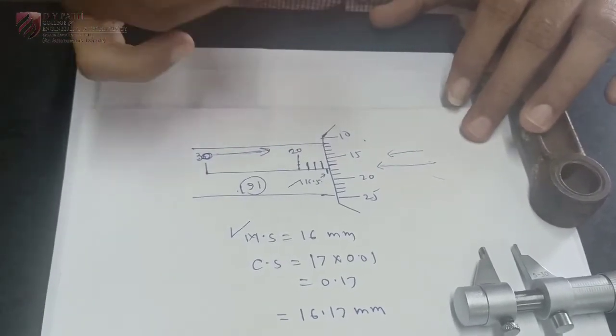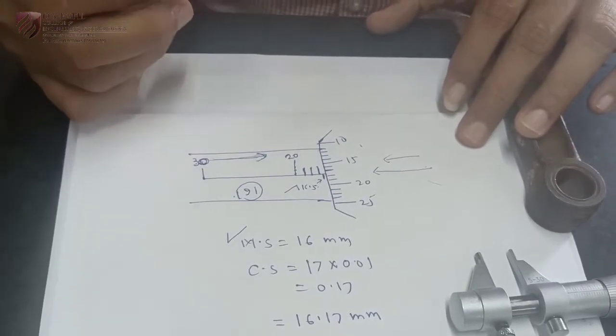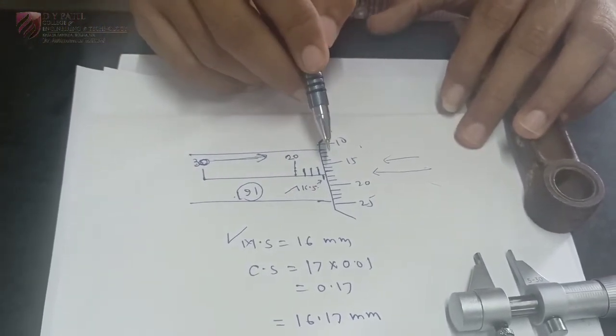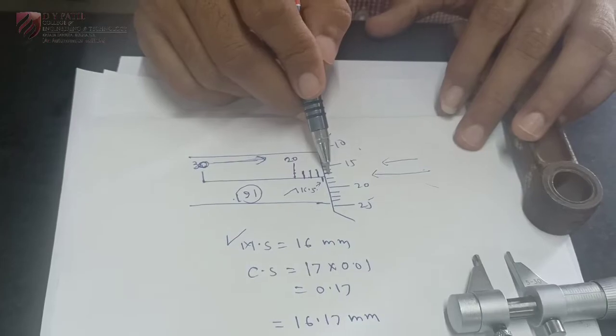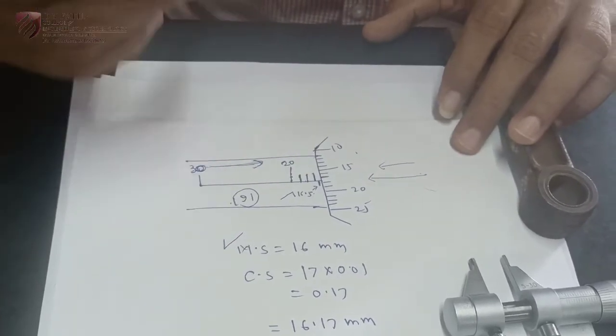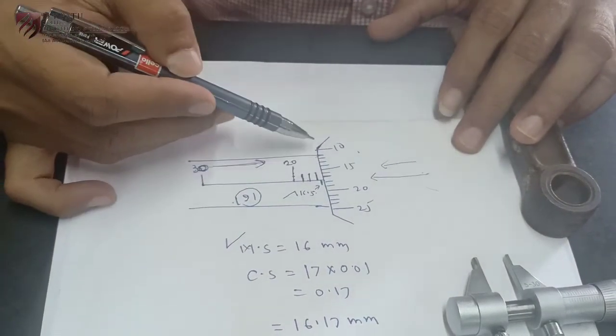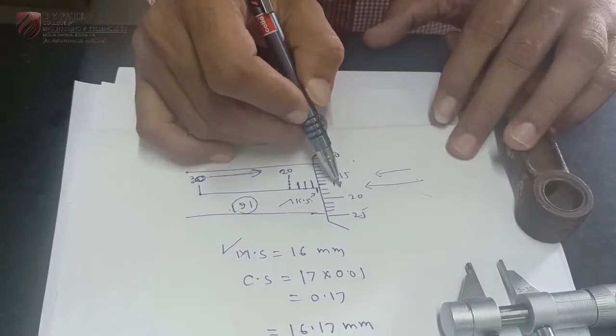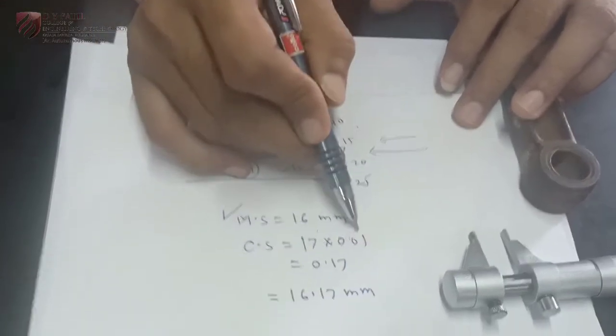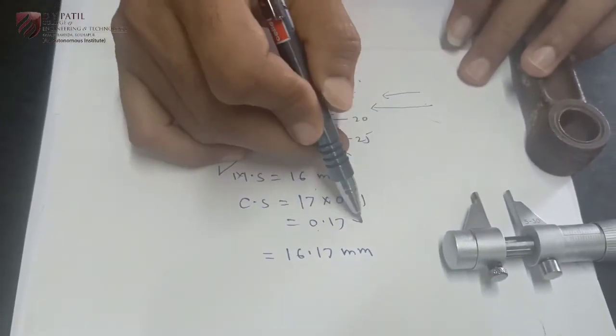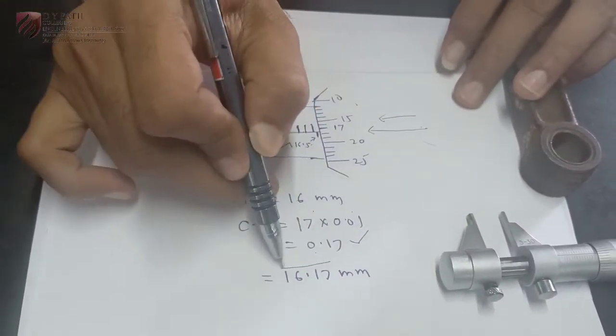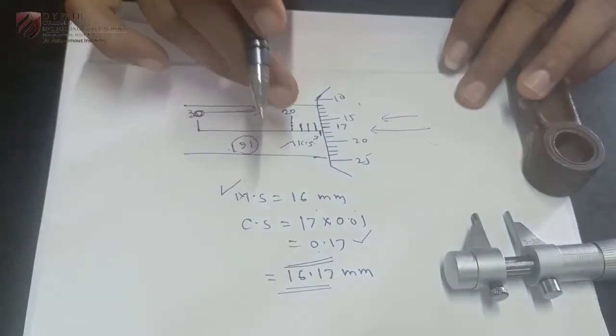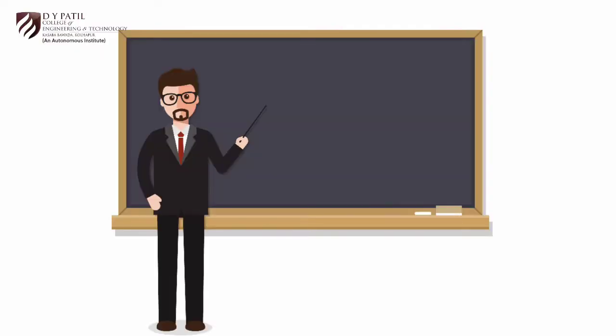To read circular scale, again circular scale is graduated in opposite way. So you have to either find out a match between baseline and circular scale reading or you have to read that reading which is above the baseline. For example here the reading which is above is division number 17. So 17 multiplied by 0.01 is the least count, 0.17 is the reading. So 16.17mm is the final reading of this inside micrometer.